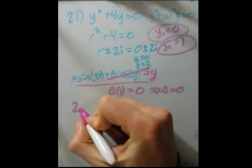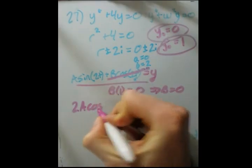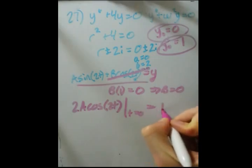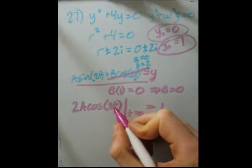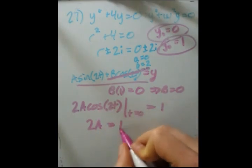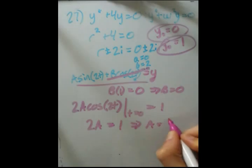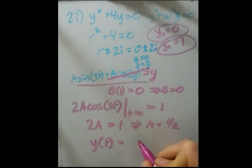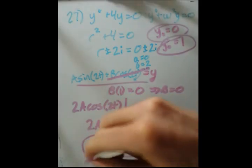Now we have y prime at 0 is 1. So we take y prime at time t equals 0 is equal to 1. If we plug in that here, we end up with 2a times cosine of 0, which is 1, is equal to 1. So a equals 1 half. So our final solution with the initial value considered equals 1 half, which is our a value, times sine of 2 times t, and then plus 0 cosine.